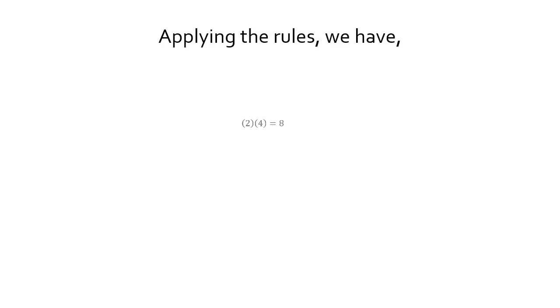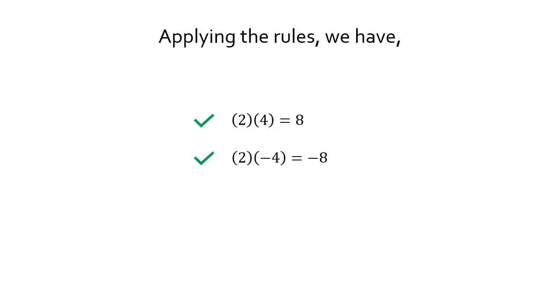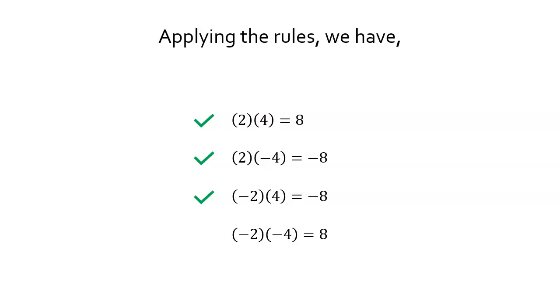Let's multiply two numbers. 2 times 4 equals positive 8 — I'm convinced this is true. 2 times negative 4 equals negative 8 — this is also true. Negative 2 times 4 equals negative 8 — again, this is true. Negative 2 times negative 4 equals positive 8. Is it really true?